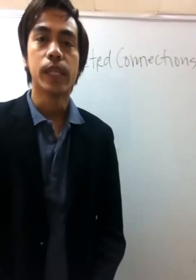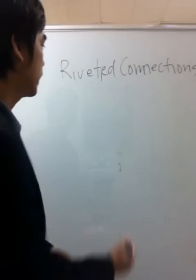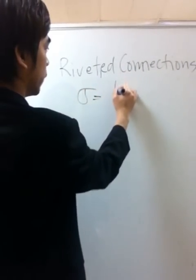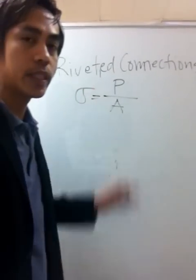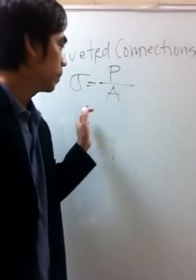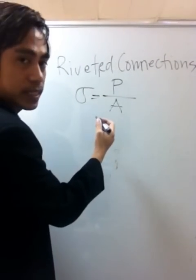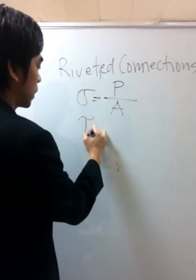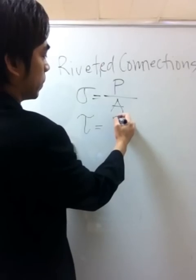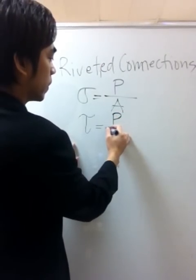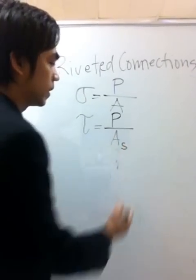If you remember the concept of stress from our previous video, stress is defined as the force applied over a surface area where the force is applied. We are going to use this principle, but now for shearing stress. We are going to use the symbol tau to represent the shearing stress, with force P for the shearing force and the area under shearing.